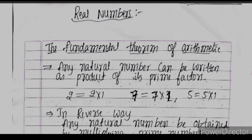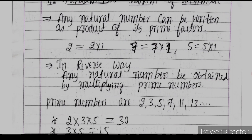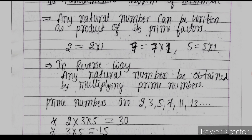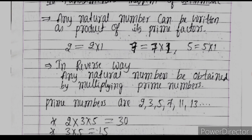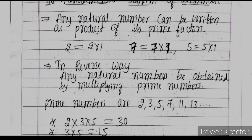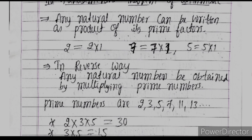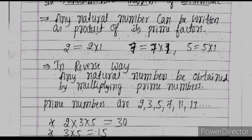The Fundamental Theorem of Arithmetic states that any natural number can be written as a product of its prime numbers, also called prime factors. Prime numbers are numbers which have only two factors: one and the number itself. Examples of prime numbers are 2, 3, 5, 7, 11, 13, 17, 19, and 23.